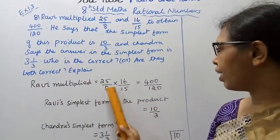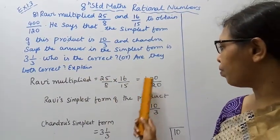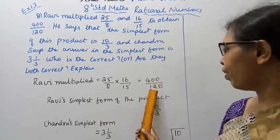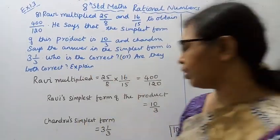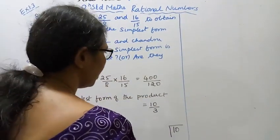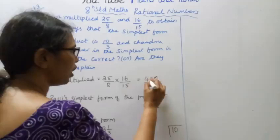Multiplying 25 by 8 and 16 by 15, we get 400 by 120. Ravi's simplest form of the product is 10 by 3. We can cancel to reduce this fraction.